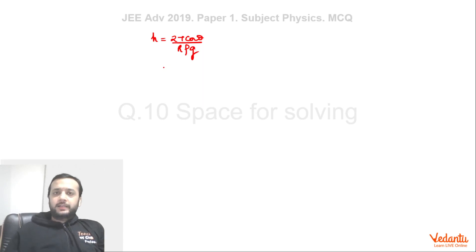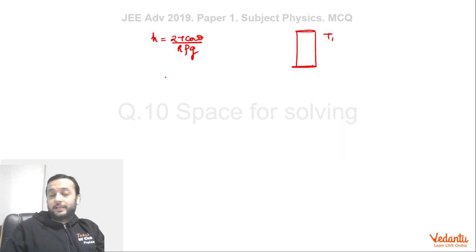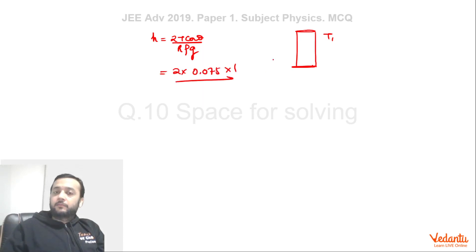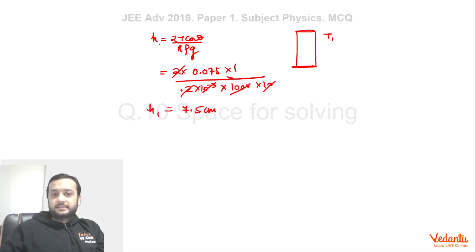Let us assume the whole capillary was formed by the material of T1 only. If we have a single capillary formed entirely by T1 material, the water is going to rise — surface tension of water is 0.075, cosθ = 1 for T1, R = 0.2 mm = 0.2 × 10⁻³, density is 1000, gravity is 10. After cancellation, this becomes 7.5 centimeters. So a capillary made entirely of T1 will have water rising to 7.5 cm.